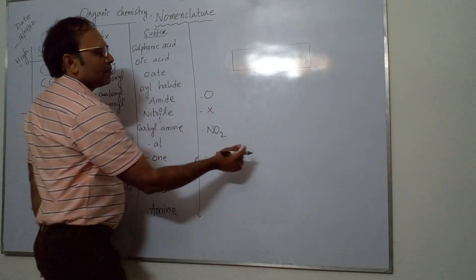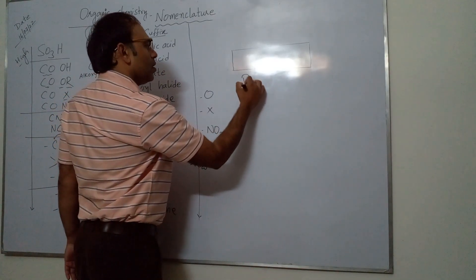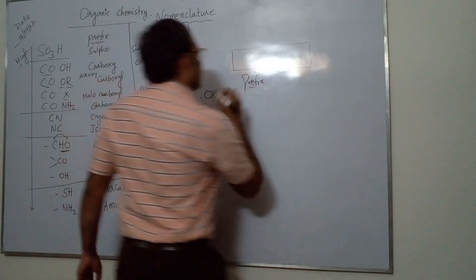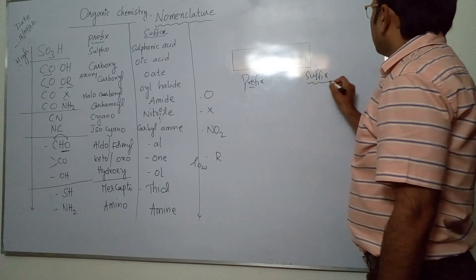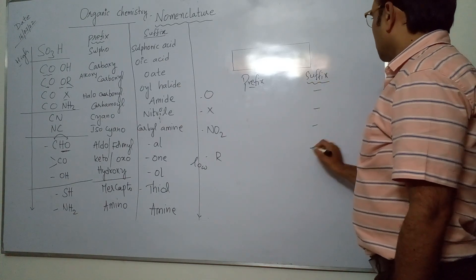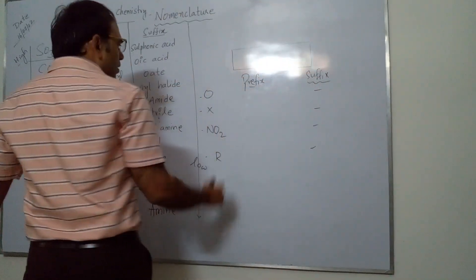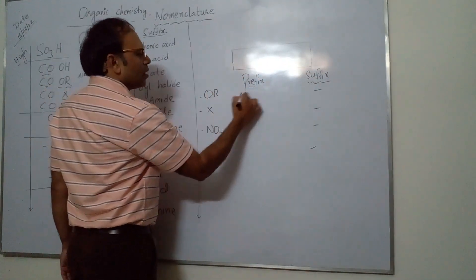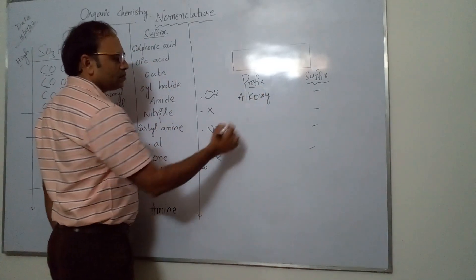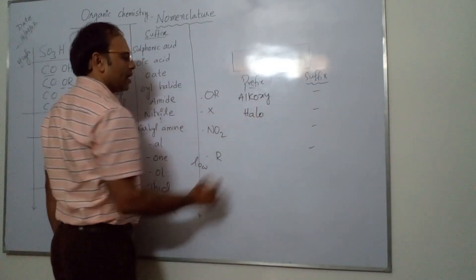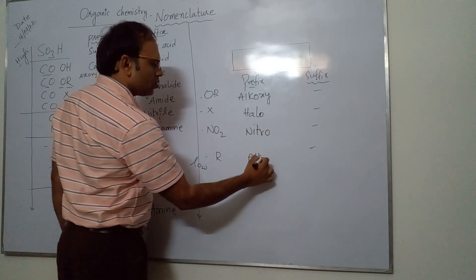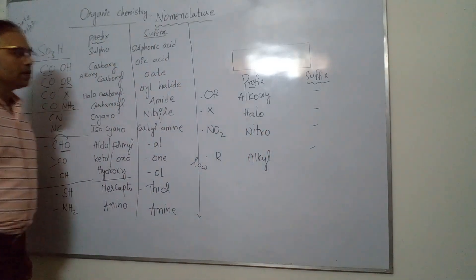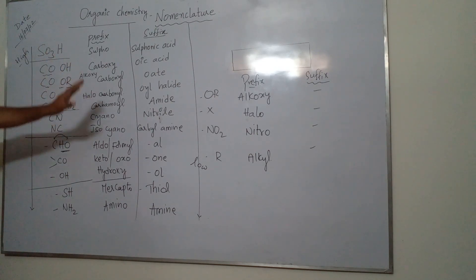The last few functional groups — ether (OR), halogens (X), NO2, and R (alkyl group) — have lower priority and do not have a suffix form. They are only written as prefixes: 'alkoxy' for ether, 'halo' for halogens, 'nitro' for NO2, and 'alkyl' for R. With this we have covered prefixes and suffixes for all functional groups.